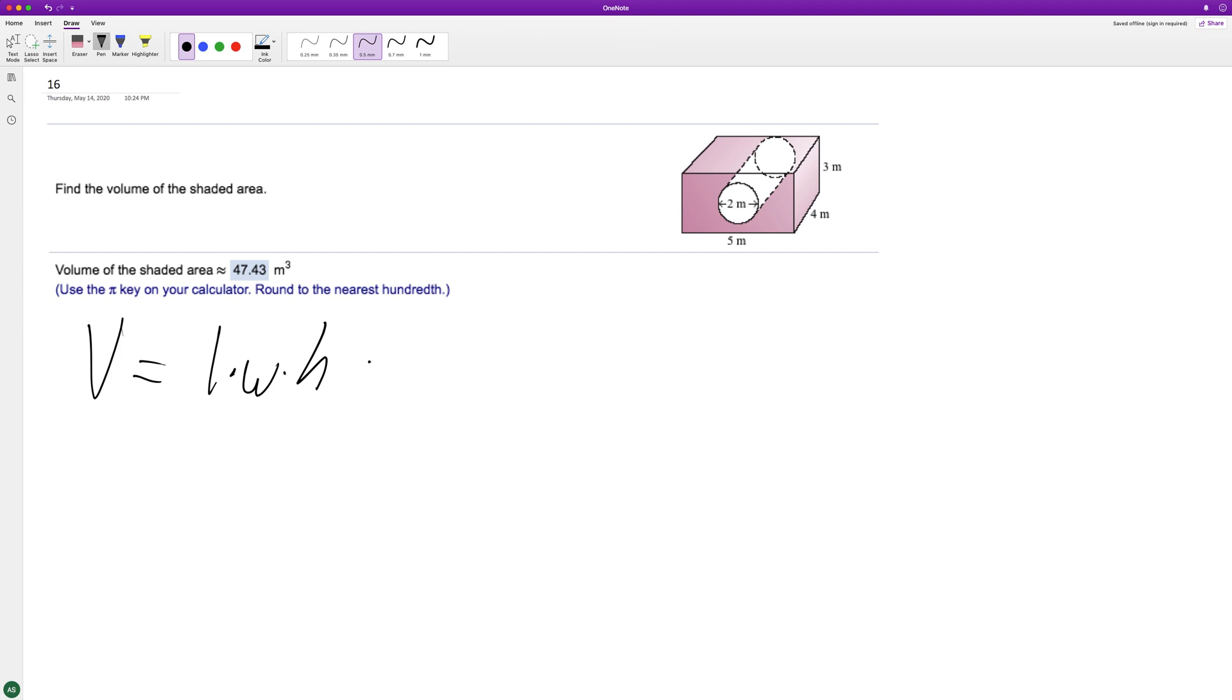But then to find the total volume, the real volume, we're going to subtract the radius squared times pi times the length.